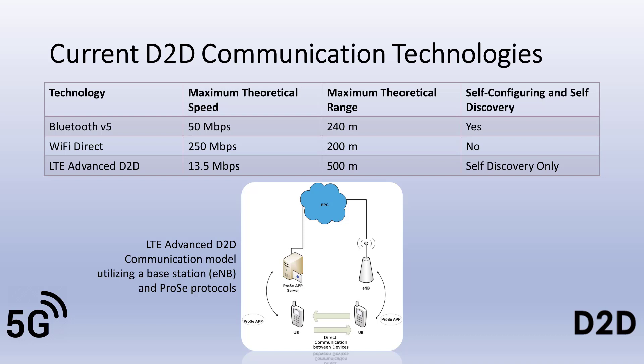D-to-D use cases for communications have a number of benefits over the traditional base station cellular model. D-to-D communications offer improved spectral efficiency, data throughput, energy efficiency, and fairness with lower latencies. Current D-to-D technologies include Bluetooth, Wi-Fi Direct, and LTE Direct. These technologies differ in data rates, distance between communication devices, and device discovery mechanisms. The LTE Advanced communication model utilizes a base station and ProSE protocols to initiate and maintain a session, but this model does not meet the speed and latency specifications for 5G D-to-D communications.